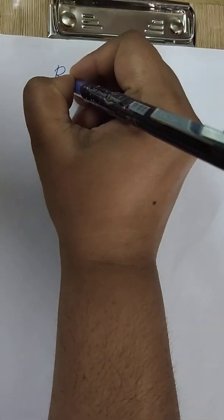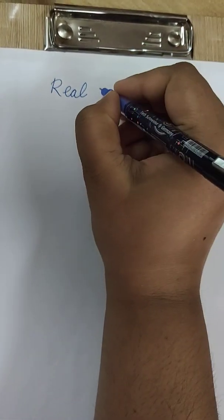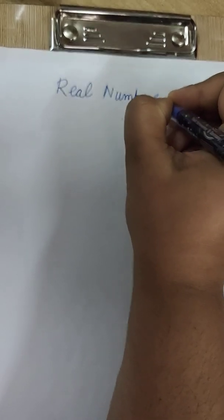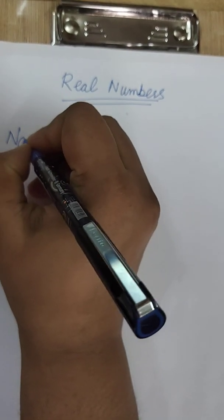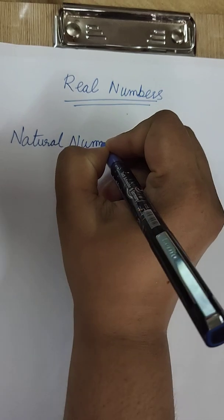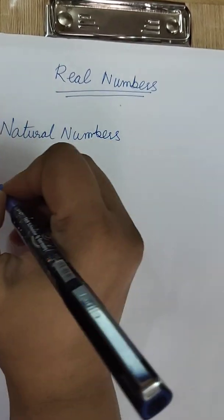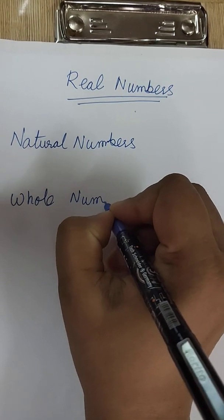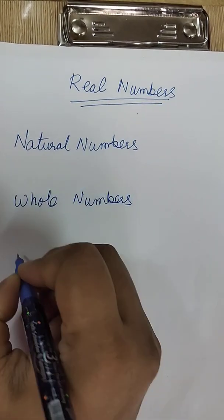First of our chapter is real numbers. Then it is the collection of all natural numbers, whole numbers, integers.